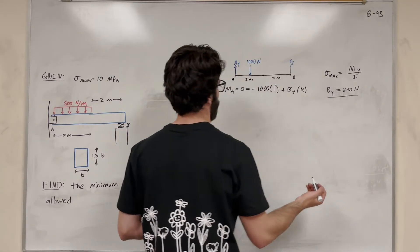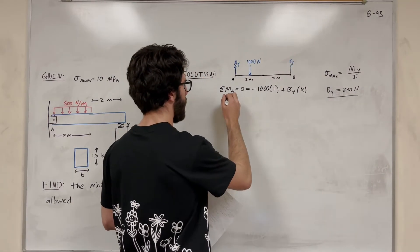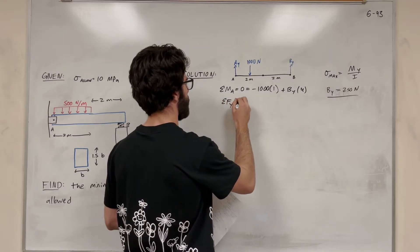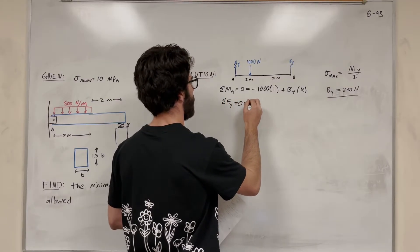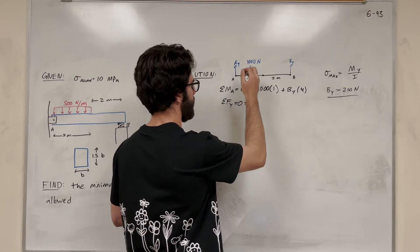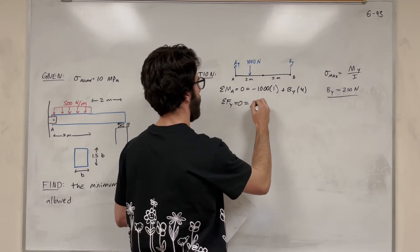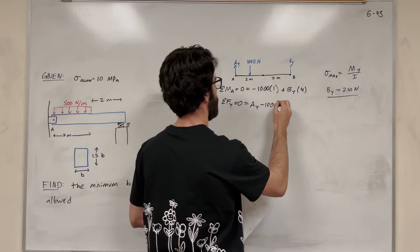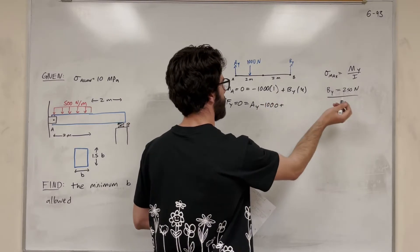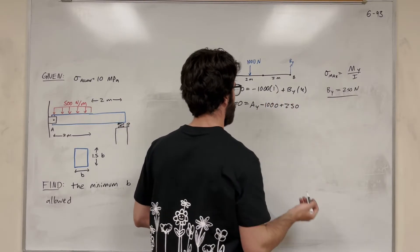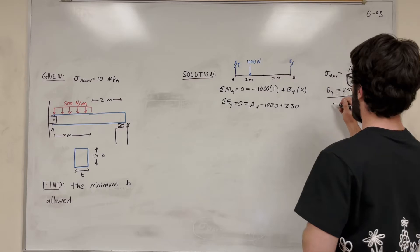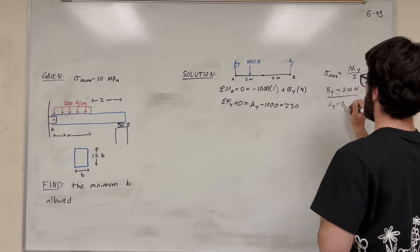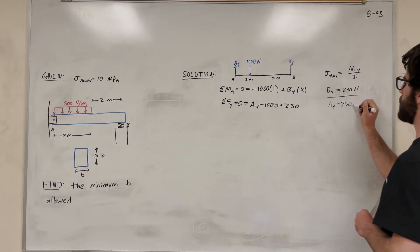Now that we know B_Y, we can find A_Y using the sum of forces in the Y direction equal to zero. That gives us A_Y minus 1,000 plus 250 equals zero, so A_Y is equal to 750 N.